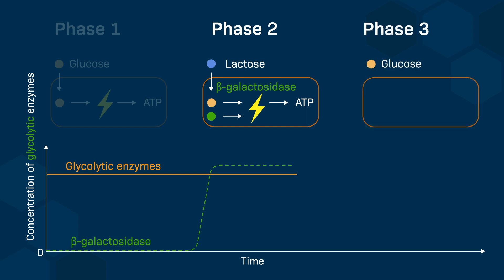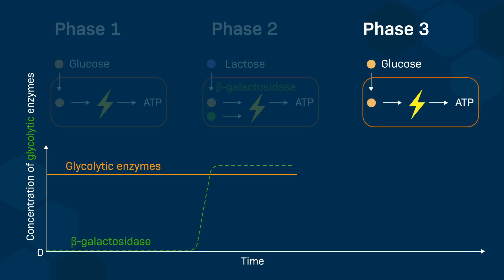During the third phase of growth, where lactose is replaced by glucose as the only source of carbon available for the bacteria, the concentration of glycolytic enzymes remains high and constant, and there is a relatively fast decrease in the concentration of beta-galactosidase as it is no longer needed by the bacteria.